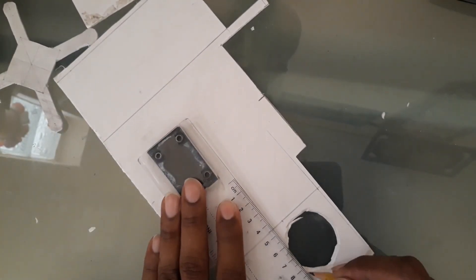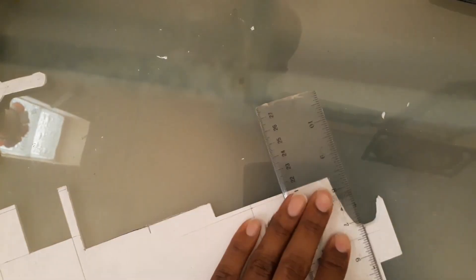I am using PVC sheet for the body of the quadcopter. I am cutting a square out of it which is 35 millimeters by 35 millimeters.